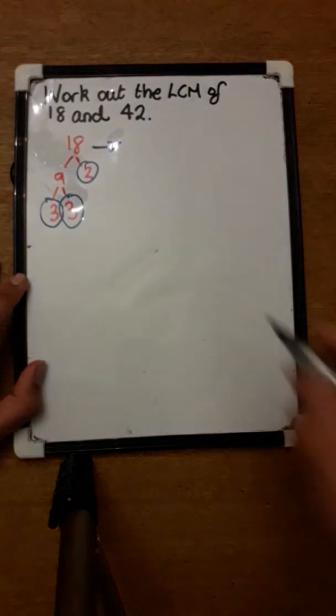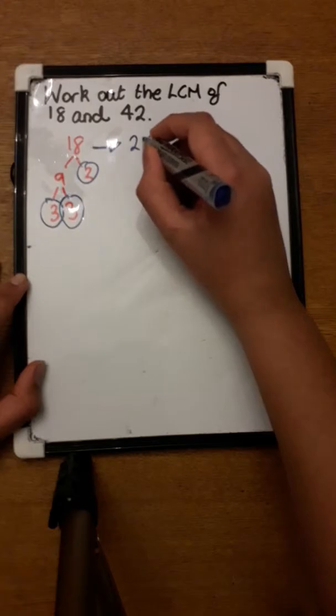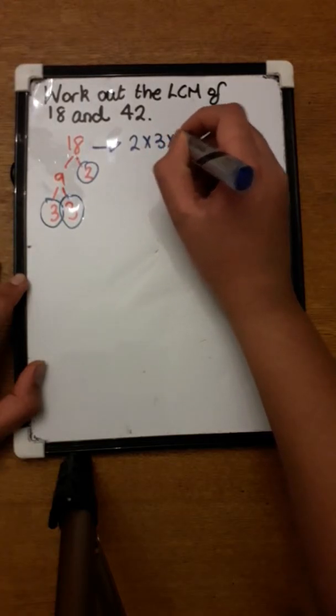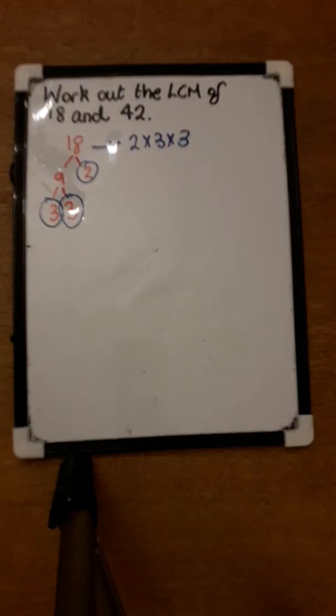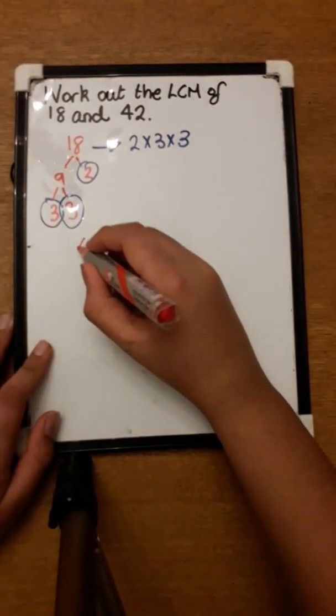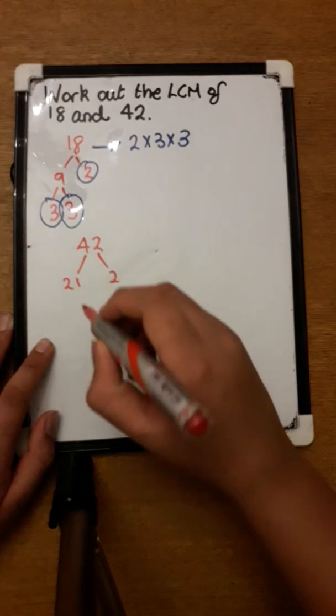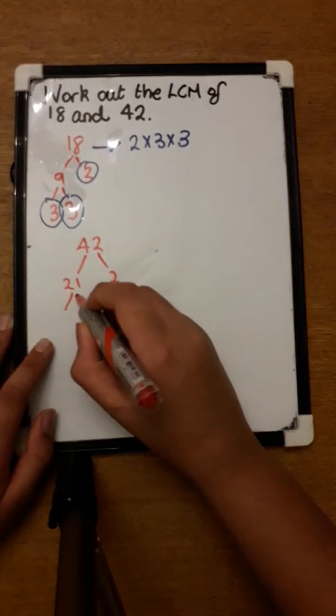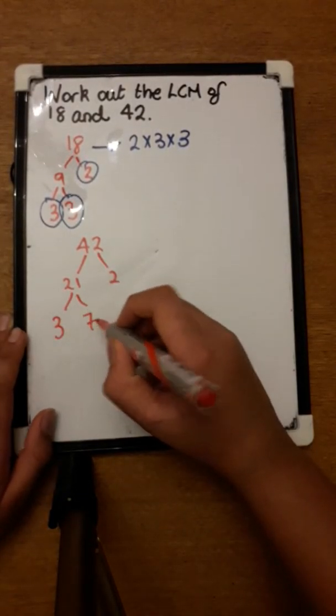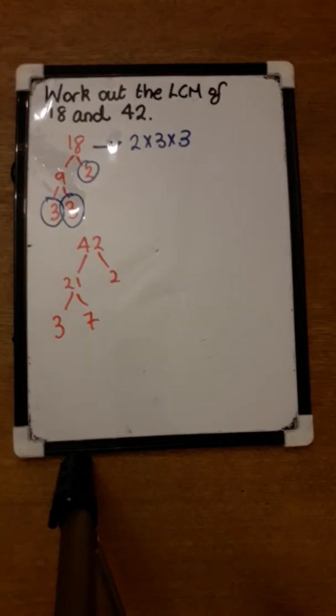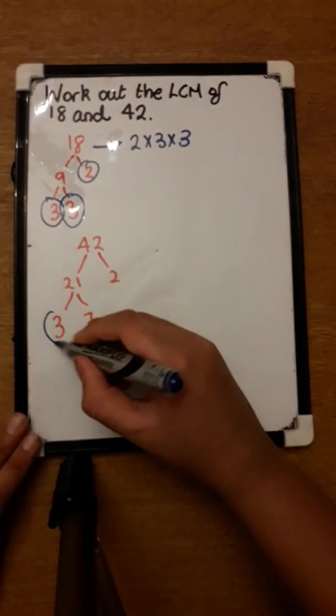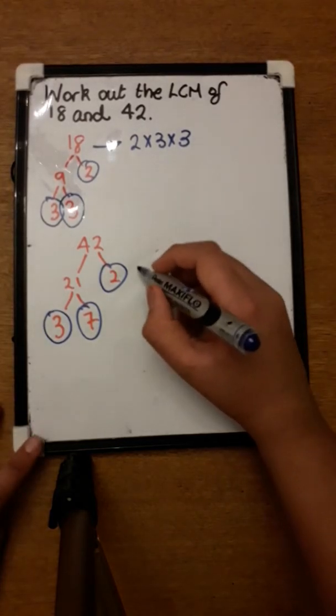Now I'll do 42. I'll divide it by 2, which gives 21, and then to get 21 you can do 3 times 7. As you can see, they're all prime factors, so I'll circle them all and write it as 2 times 3 times 7.